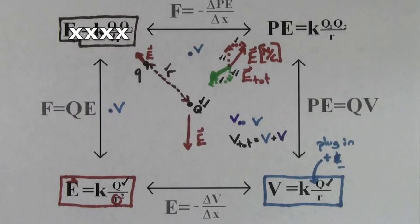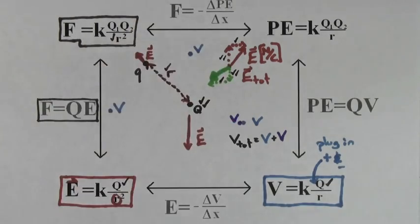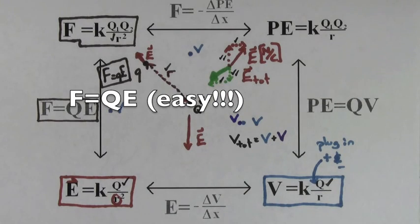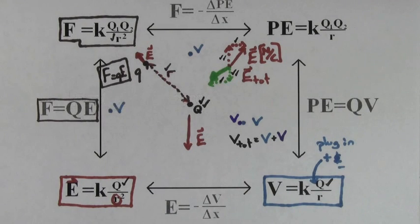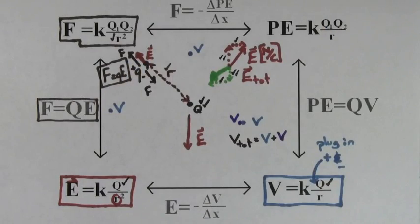You shouldn't always use KQQ over R squared to determine the electric force. If you know the electric field, more likely you're going to use the formula F equals QE. Q times E is a much easier way to find the electric force and sometimes the only way you can find the electric force on a charge. Remember that the force on a positive charge points in the direction of the electric field and the force on a negative charge points in the opposite direction of the electric field.